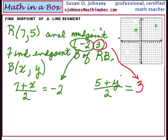So we basically have two algebra equations to solve here. 7 plus x divided by 2 equals negative 2. So that means that the 7 plus the x, before it was divided by 2, would have to be what number?